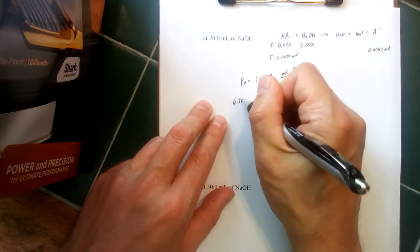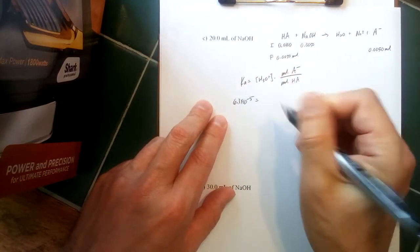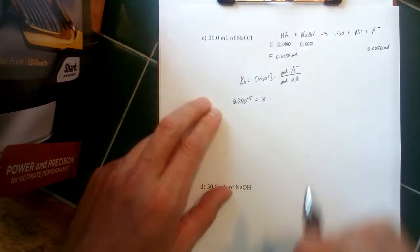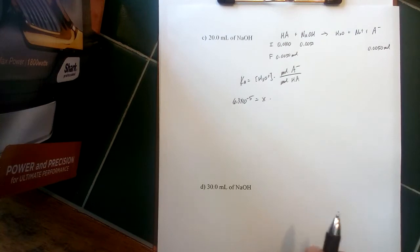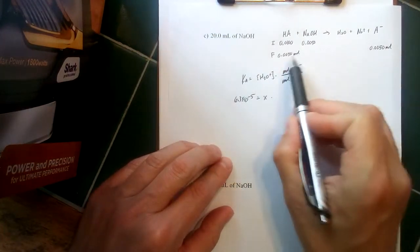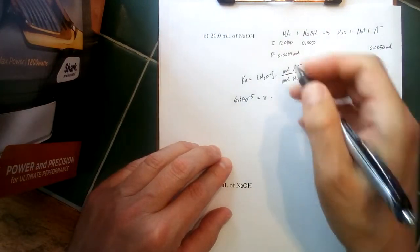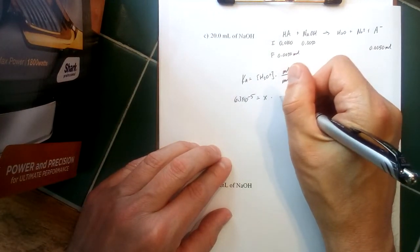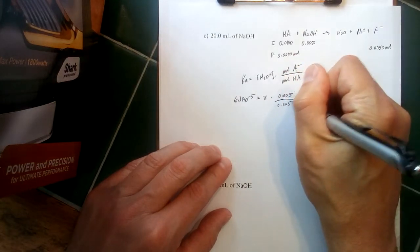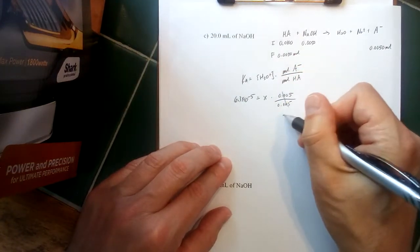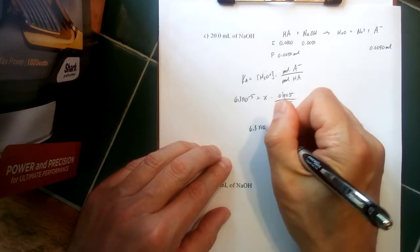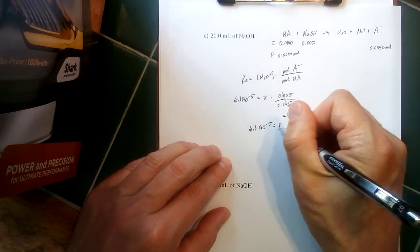So if we plug in Ka—hydronium ion concentration again is going to be x—now this term here, this is why this is an interesting position within the titration to think about: They're the same moles of weak base and moles of weak acid, so this whole term vanishes. 0.005 divided by 0.005—that's equal to one. So what we end up with here is 6.3 times 10 to the minus fifth is equal to x, is equal to the hydronium ion concentration.